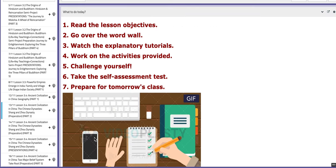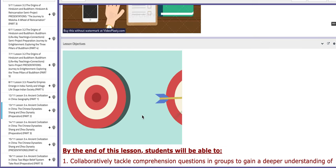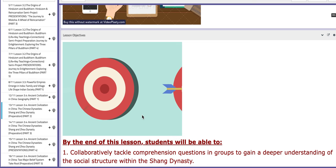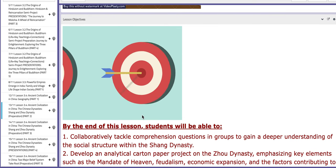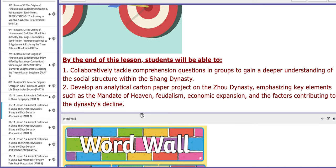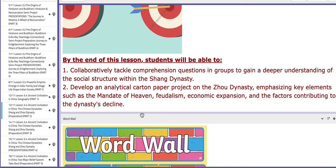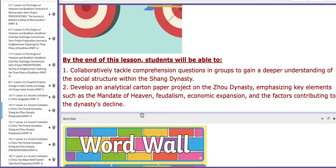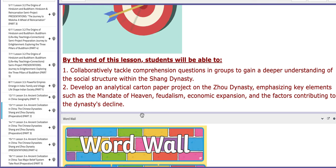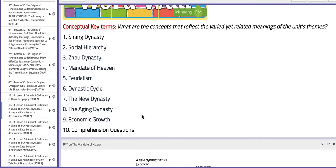On the second day of this week, we are going to start explaining the Chinese dynasties, the Shang and the Zhou dynasties. You will develop an analytical carton paper project on both dynasties, emphasizing key elements such as the Mandate of Heaven, feudalism, economic expansion, and factors contributing to the dynasties' decline. These are the essential key terms that you are going to acknowledge: Shang dynasty, social hierarchy, Zhou dynasty, Mandate of Heaven, feudalism, dynastic cycle, economic growth, and so on.